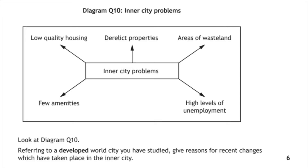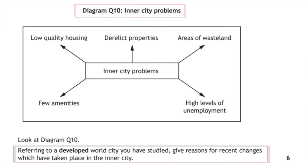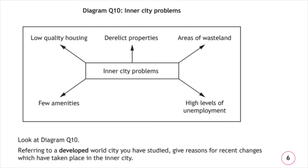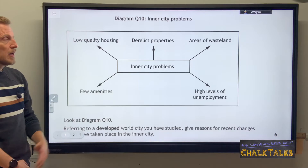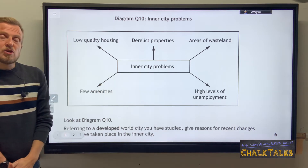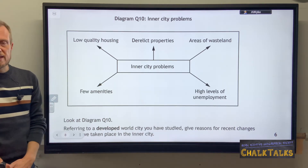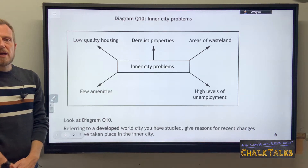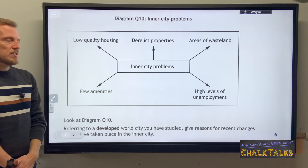This next past paper question looks very similar to the previous one, with one exception — the focus is on the inner city. You must give a range of reasons for changes that have taken place in the inner city, and your answer must focus on a developed world city that you have studied. Therefore your answer must start by naming a particular city, otherwise you cannot get full marks. The question is worth six marks, so you must make six points.